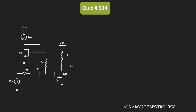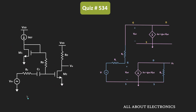To find the small-signal voltage gain, we replace each MOSFET with its small-signal model. For AC analysis, all DC sources act as zero — the DC voltage source VDD acts as a zero-volt source, the DC current source acts as an open circuit, and capacitor C1 acts as a short circuit. For MOSFET M2, the input voltage source and resistor Rs are connected at the gate terminal, the source terminal is connected to ground, and drain resistor Rd is connected between the drain and ground terminals, with the output measured at the drain.